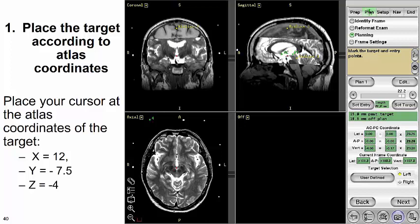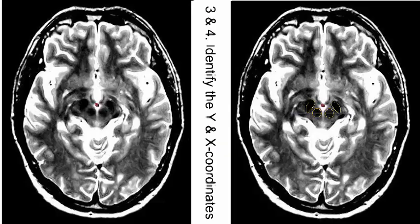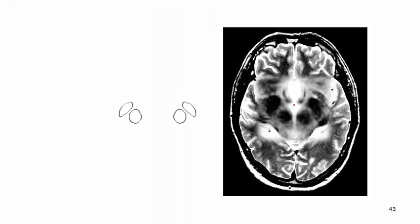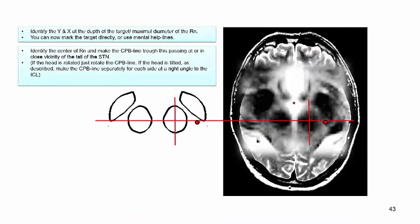Starting the detailed walkthrough: place the target at atlas coordinates with a laterality of 12 mm, 7.5 mm behind the midcommissural point, and 4 mm below the ACPC plane. Identify the maximal diameter of the red nucleus — this gives the Z coordinate. For steps 3 and 4, identify the Y and X coordinates at the level of the maximal red nucleus diameter. You can mark the target directly, somewhat posteromedial to the posterior tip of the STN, or use mental helplines. Identify the center of the red nucleus, make the CPB line passing through these centers at or in close vicinity of the tail of the STN.